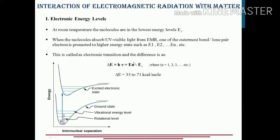The change in energy is given by Planck's equation hμ, which can also be represented as the energy in the nth orbital minus the energy in the ground state level, where n can be any integer 1, 2, 3, and so on. The difference in energy between these two levels lies in the range of 35 to 71 kilocalories per mole. This means that for an electron to jump from its ground state to the next higher energy level, the energy of the radiation should be in the range of 35 to 71 kilocalories per mole.